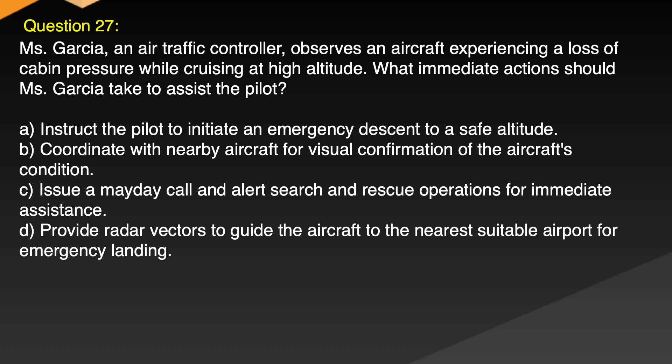Question 27. Ms. Garcia, an air traffic controller, observes an aircraft experiencing a loss of cabin pressure while cruising at high altitude. What immediate actions should Ms. Garcia take to assist the pilot? A. Instruct the pilot to initiate an emergency descent to a safe altitude. B. Coordinate with nearby aircraft for visual confirmation of the aircraft's condition. C. Issue a mayday call and alert search and rescue operations for immediate assistance. D. Provide radar vectors to guide the aircraft to the nearest suitable airport for emergency landing. Correct answer: A. Instruct the pilot to initiate an emergency descent to a safe altitude.